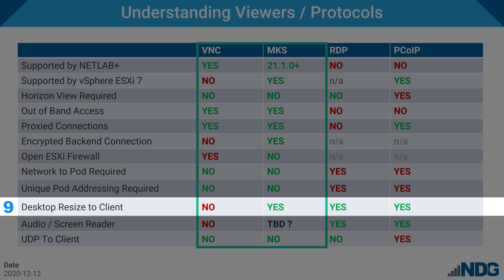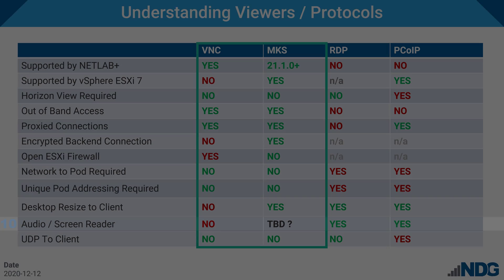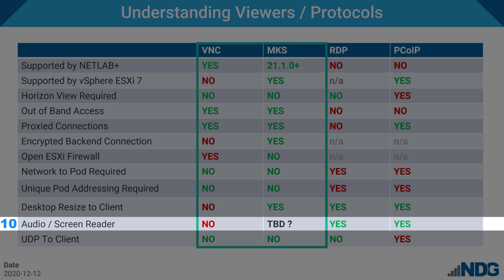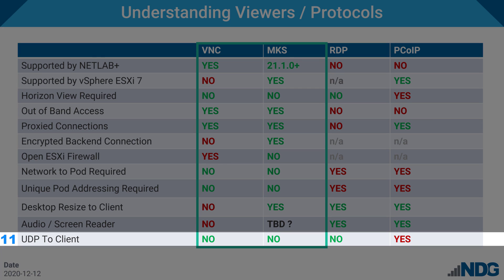Number nine, the MKS Viewer supports desktop resizing in single-user reservations. This capability allows the virtual machine desktop resolution to change dynamically to fit the available space within the user's browser. This is demonstrated in part one — the link is in the upper right. Number ten, we are working with VMware to provide audio and support of screen readers for the visually impaired. At this time, we are not certain if this can be supported with the current version of VMware's MKS backend. Number eleven, UDP to client is not required, which would otherwise present significant challenges for off-campus remote learning.